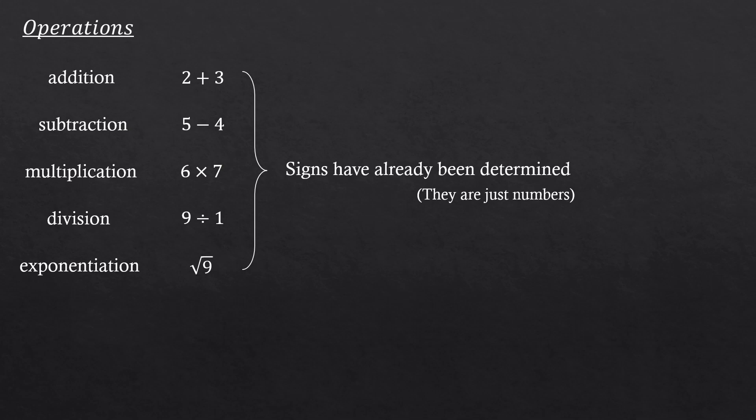It's the exact same thing. When you square root a number, we already know the sign. Square root of 9 isn't plus minus 3. It's just plus 3 because that was the positive square root of 9.